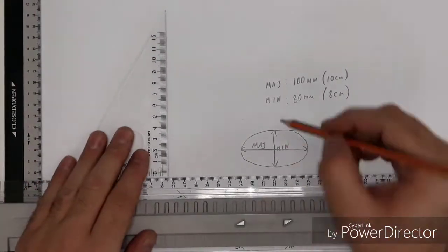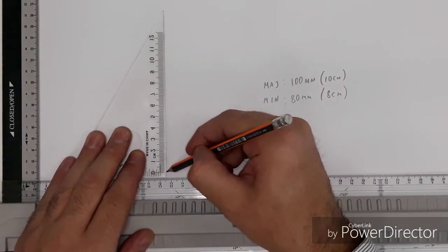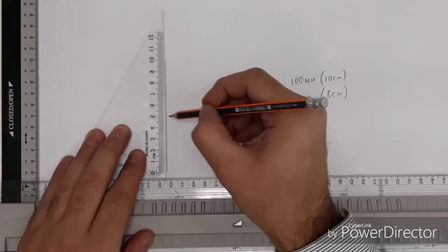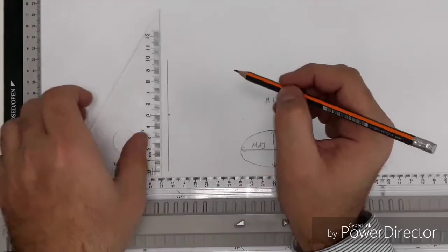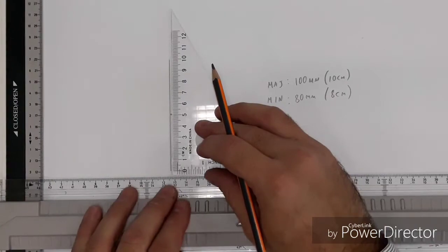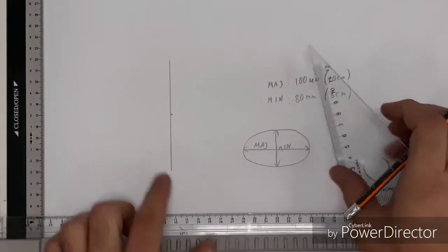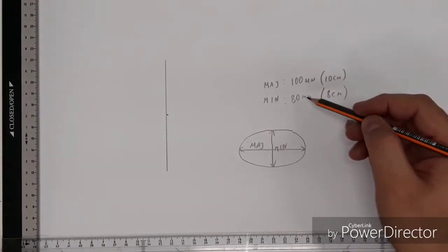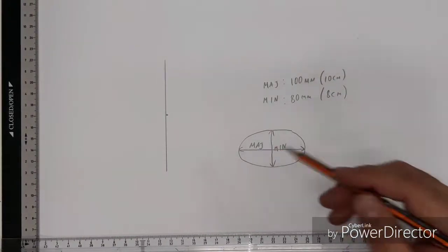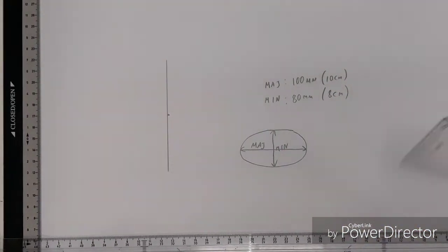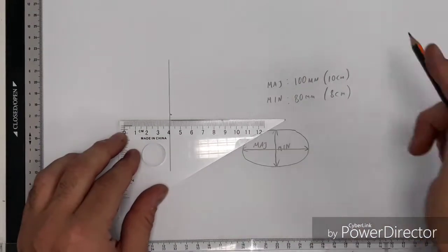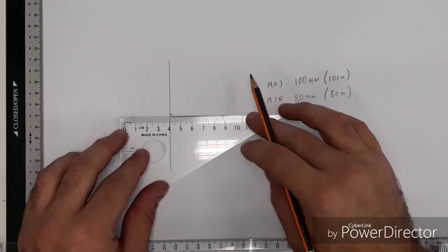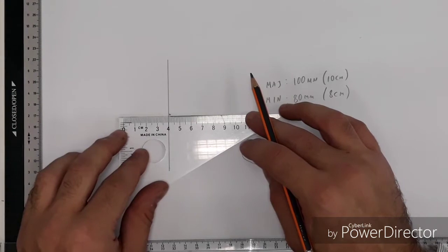Step one, draw your major axis, mark the midpoint. So that's a 10cm line with the midpoint marked at 5. From that midpoint, create your minor axis at 90 degrees to the major axis that you've drawn.